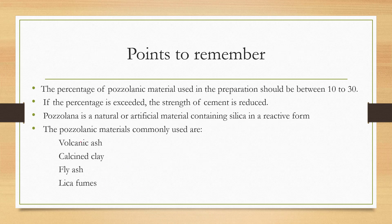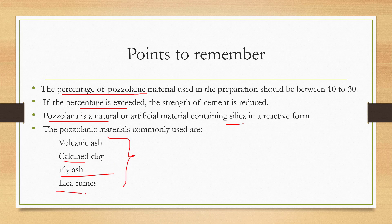Points to remember: the percentage of pozzolanic material used in preparation should be between 10 to 30 percent. If the percentage exceeds this, the strength of the cement also reduces. Pozzolana is a natural or artificial material containing silica in a reactive form. The pozzolanic materials mainly used are volcanic ash, calcium clay, fly ash, and silica fumes.